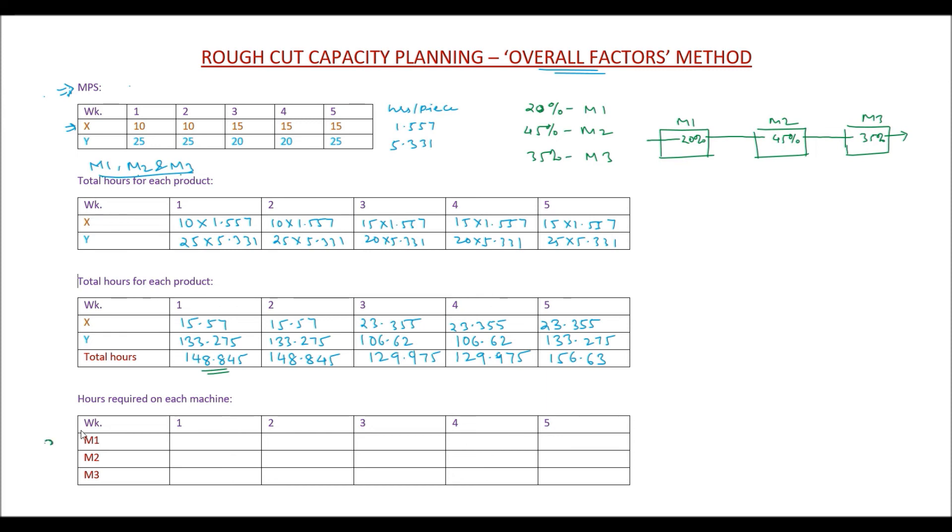Let's find that out. We know that of the total hours, 20% (that means 0.2) is utilized on M1, 45% (that means 0.45) is utilized on M2, and 35% (that is 0.35) is utilized on M3. What we are going to do is: 148.845 multiplied by 0.2 will be the hours required on M1, 148.845 into 0.45 will be the hours required on M2, and 148.845 into 0.35 will be the hours required on M3. So this becomes 29.77, 66.98...